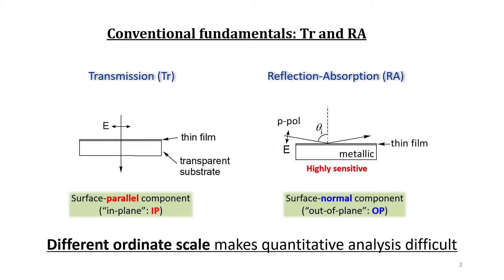One of them is the transmission spectrometry, and the other is reflection absorption. In the transmission spectrometry, IR light is irradiated perpendicularly to the film, and the transmitted light is collected by the spectrometer. In this case, the electric field is parallel to the surface, and this is why only surface parallel or in-plane component of molecular vibrations is selectively observed.